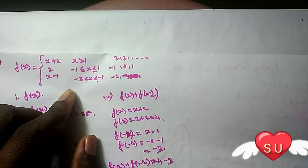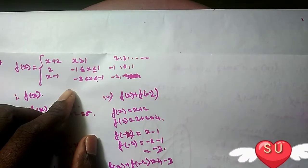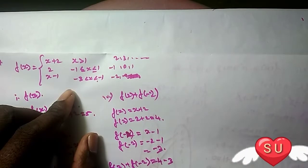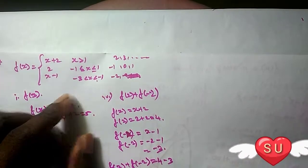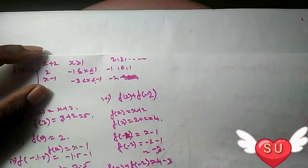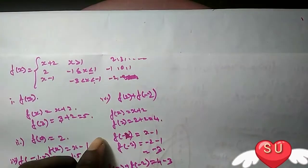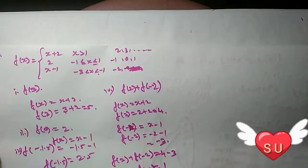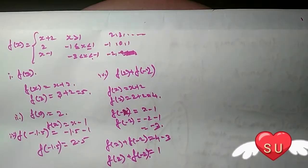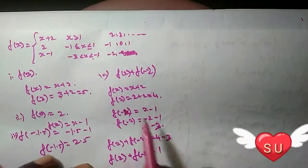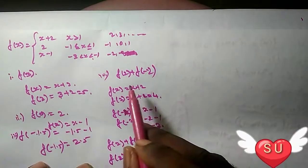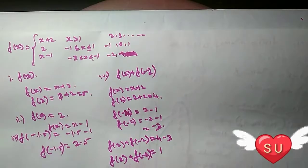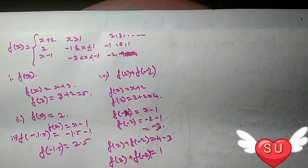So the answer is 1. That's it, friends — this is a simple problem. For the first piece, add 2; for the second piece, the value is 2; and for the third piece, subtract 1. Just identify which range your x value falls in and apply the correct formula. Easy, friends!